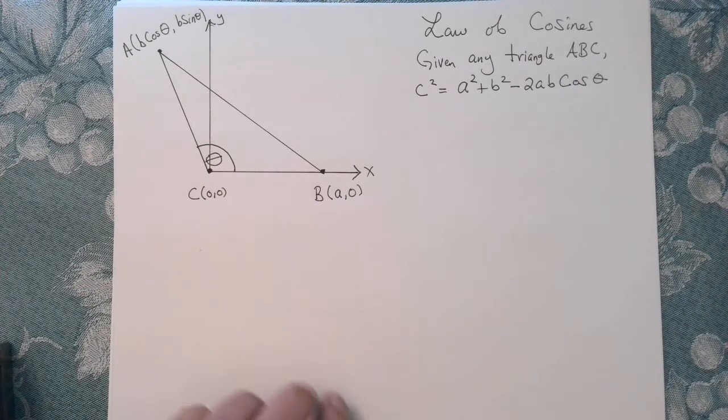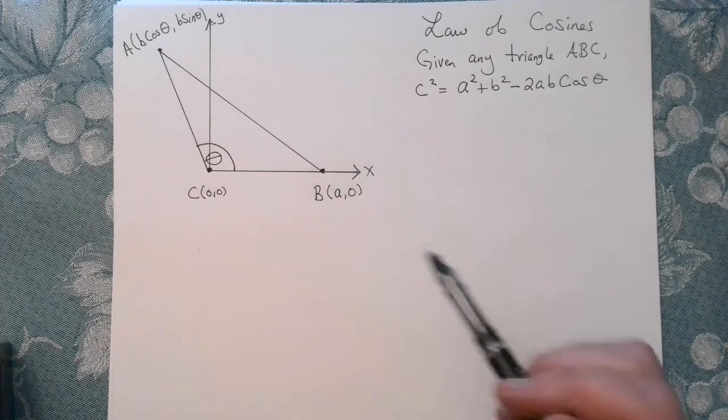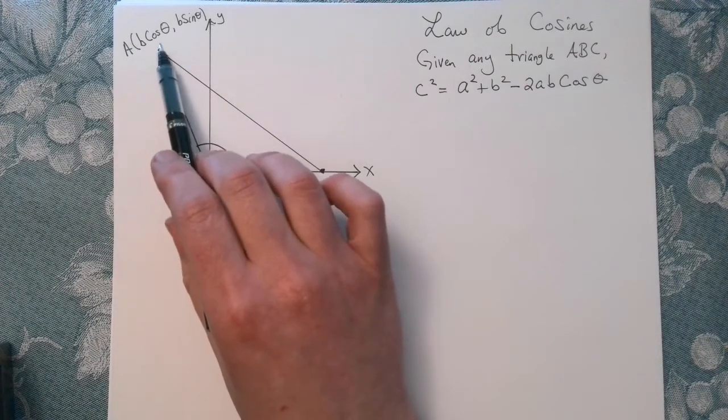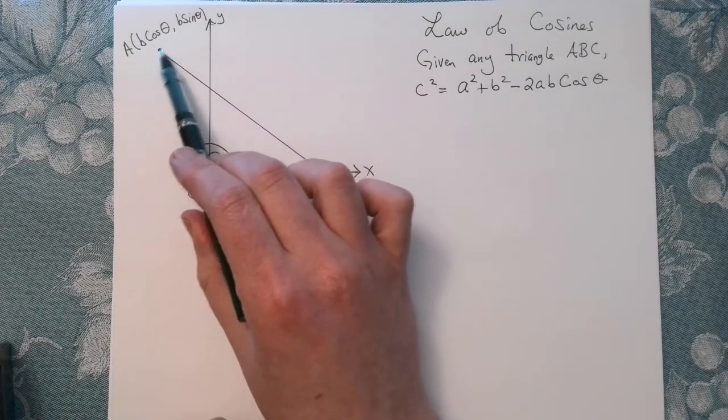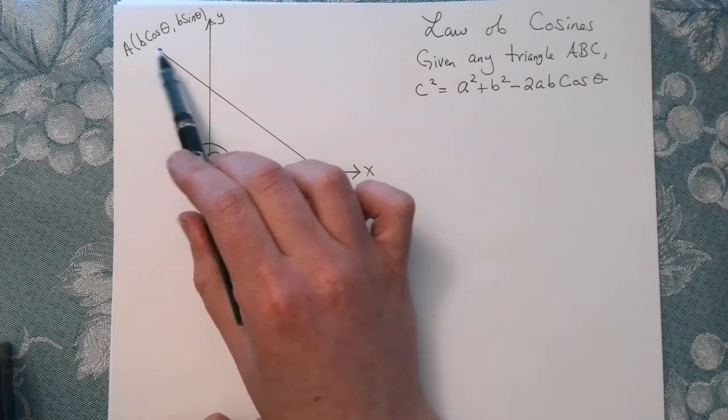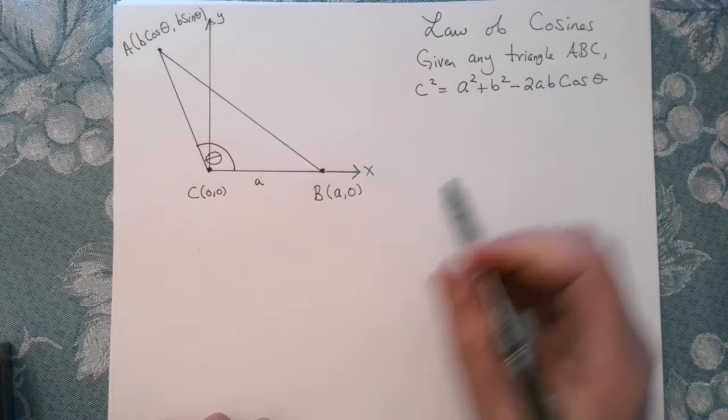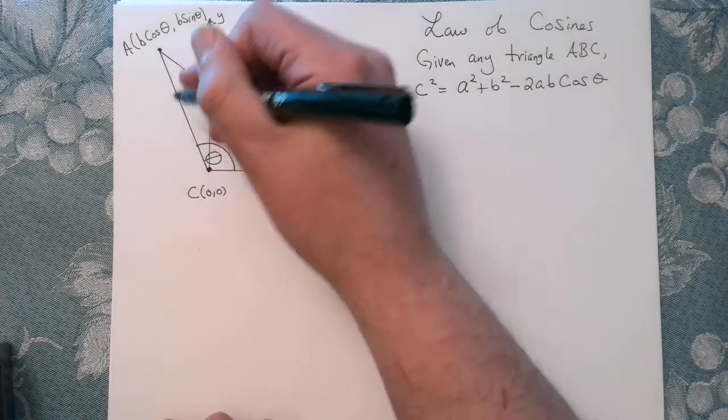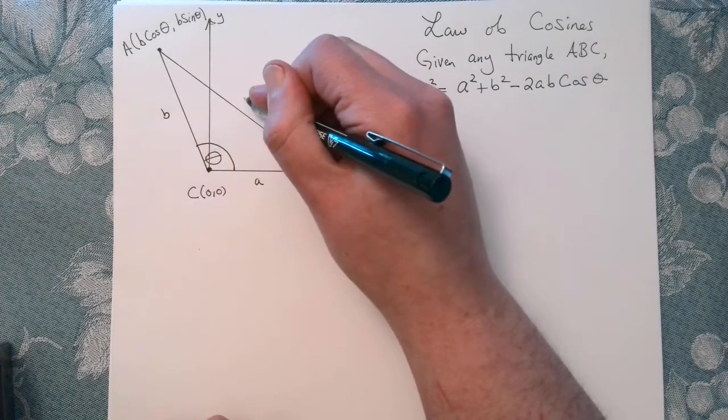So suppose we have the following situation. Here's some triangle with three vertices labeled, and I want to label the sides now. So if this is vertex A, then this right here will be little side a. And then across from B will be side b, and across from C will be side c.